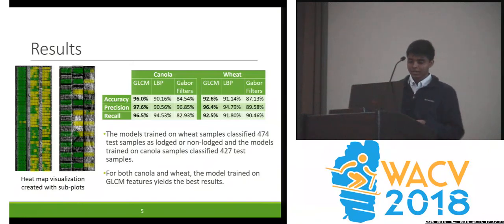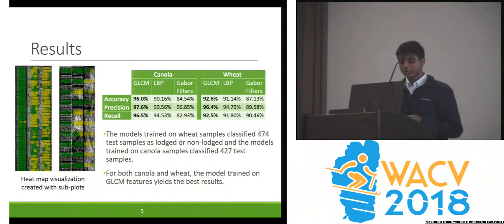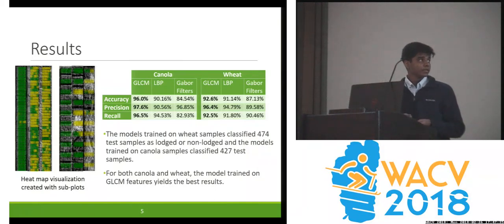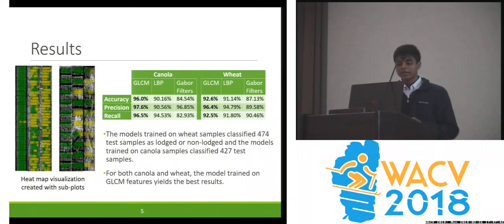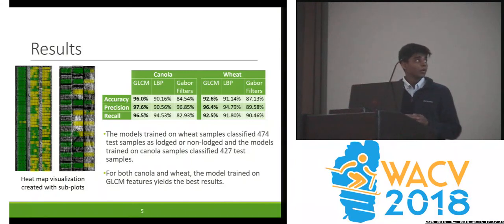In both cases, the model trained on the gray-level co-occurrence matrix performed the best, classifying 474 wheat samples with 92.6% accuracy, and 427 canola samples with 96% accuracy.